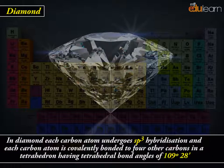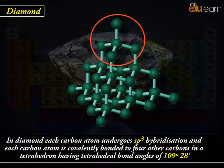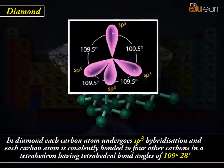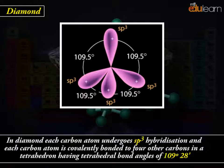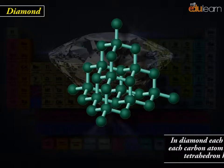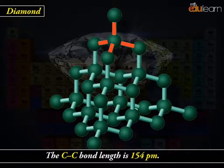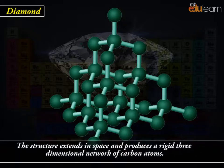In diamond, each carbon atom undergoes sp3 hybridization and each carbon atom is covalently bonded to four other carbons in a tetrahedron, having tetrahedral bond angles of 109 degrees 28 minutes. The C-C bond length is 154 pm.